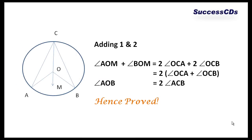Now, by adding 1 and 2, what do I get? Angle AOM plus angle BOM is equal to twice angle OCA plus twice angle OCB. AOM and BOM together when combined becomes angle AOB, and 2 times angle OCA plus angle OCB becomes angle ACB.